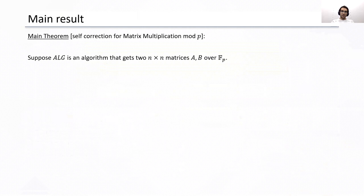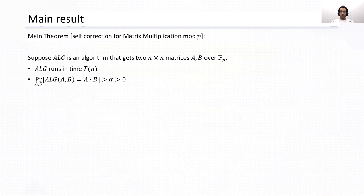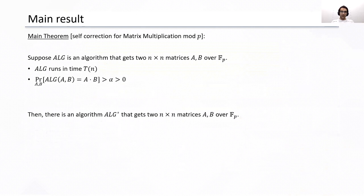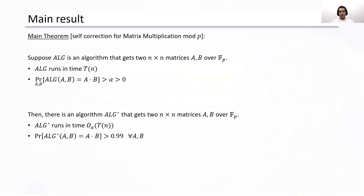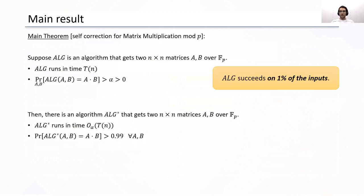Here's the main result. Suppose we are given an algorithm that gets two n by n matrices A and B over a prime field F, and the algorithm is guaranteed to run in time T, and it always outputs the correct answer but only with probability alpha — we think of alpha as a very tiny constant, for example one percent or two percent. Then there exists an algorithm ALG star that gets input matrices A and B, runs in essentially the same time O(T), but for all possible inputs A and B outputs the correct answer with high probability, for example greater than 99%. Note that the original algorithm succeeds only on one percent of the inputs, but ALG star succeeds on all possible inputs.